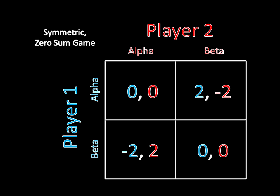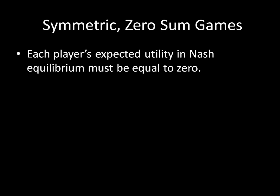Now we have an understanding of what a symmetric zero-sum game is. What's this really awesome tool? Well, it's that in a symmetric zero-sum game, each player's expected utility in a Nash equilibrium must be equal to zero.